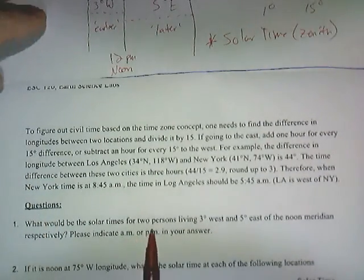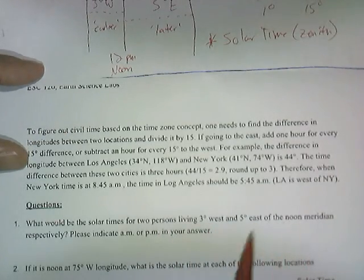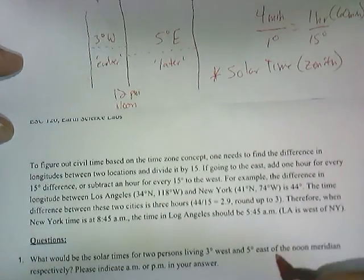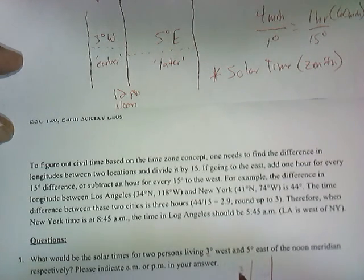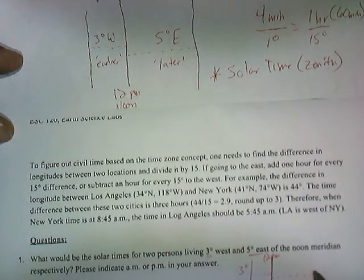The problem says: what would be the solar times for two persons living three degrees west and five degrees east of the noon meridian? I always say it's a good idea to write what I'm going to call a reference line. Three degrees west is going to be west of the noon meridian, and we know that the noon meridian is 12 p.m. This example is going to be five degrees east.